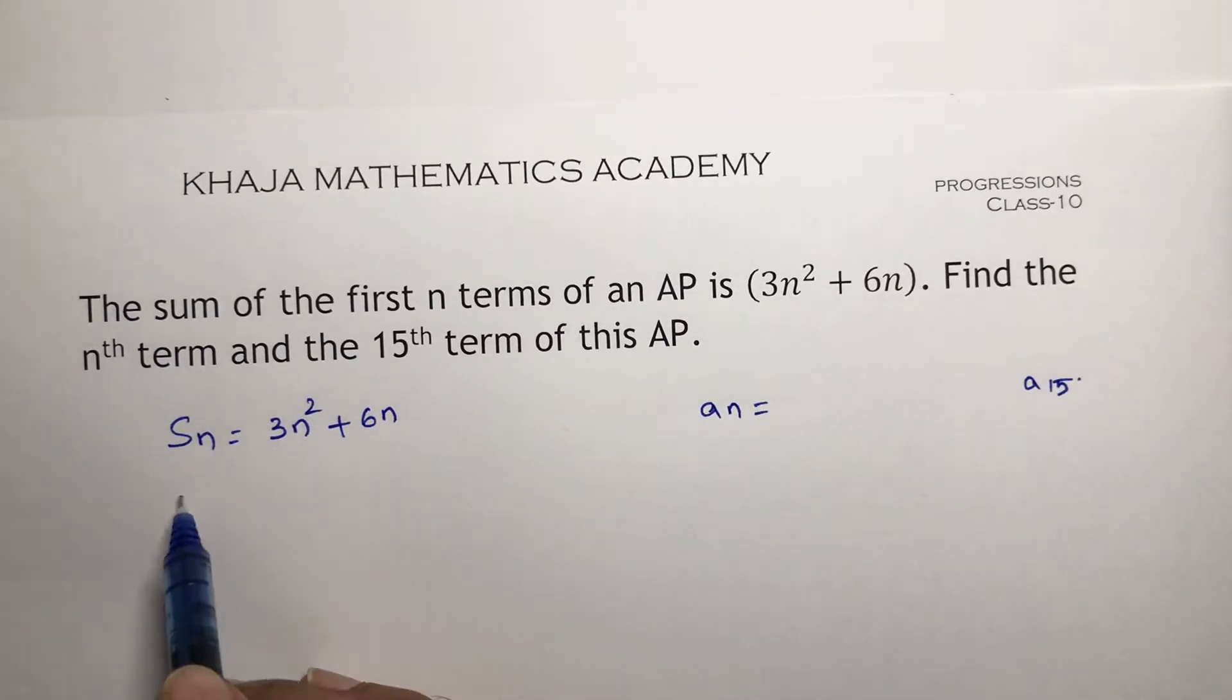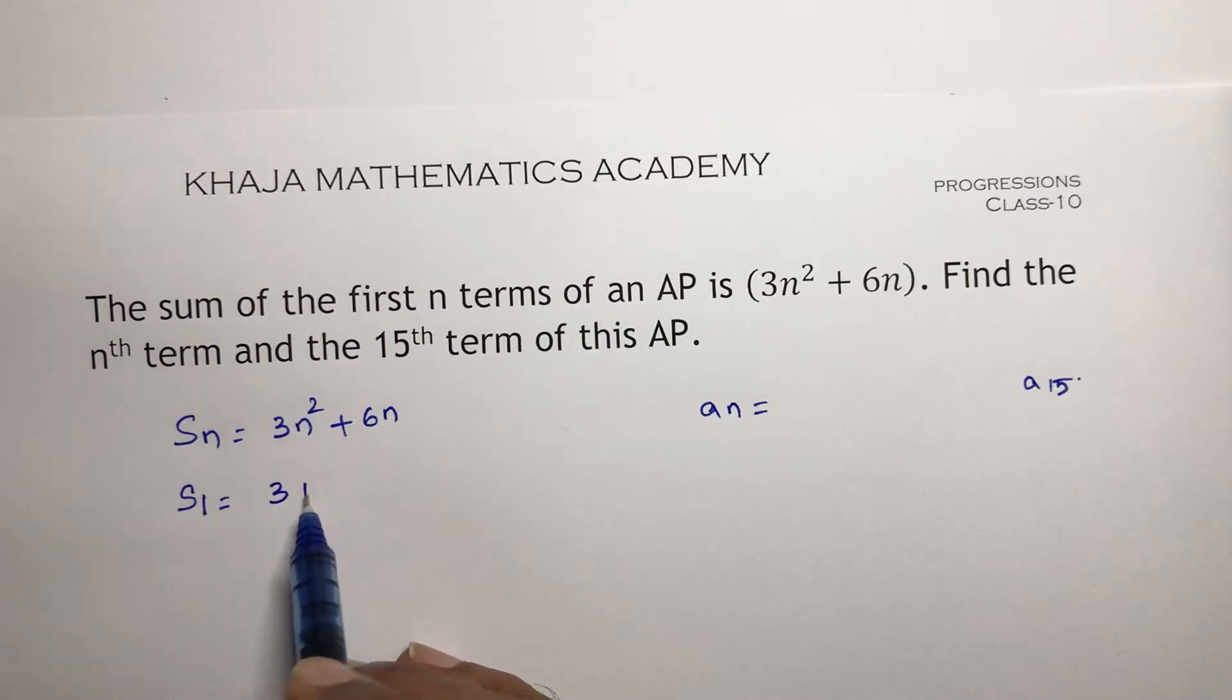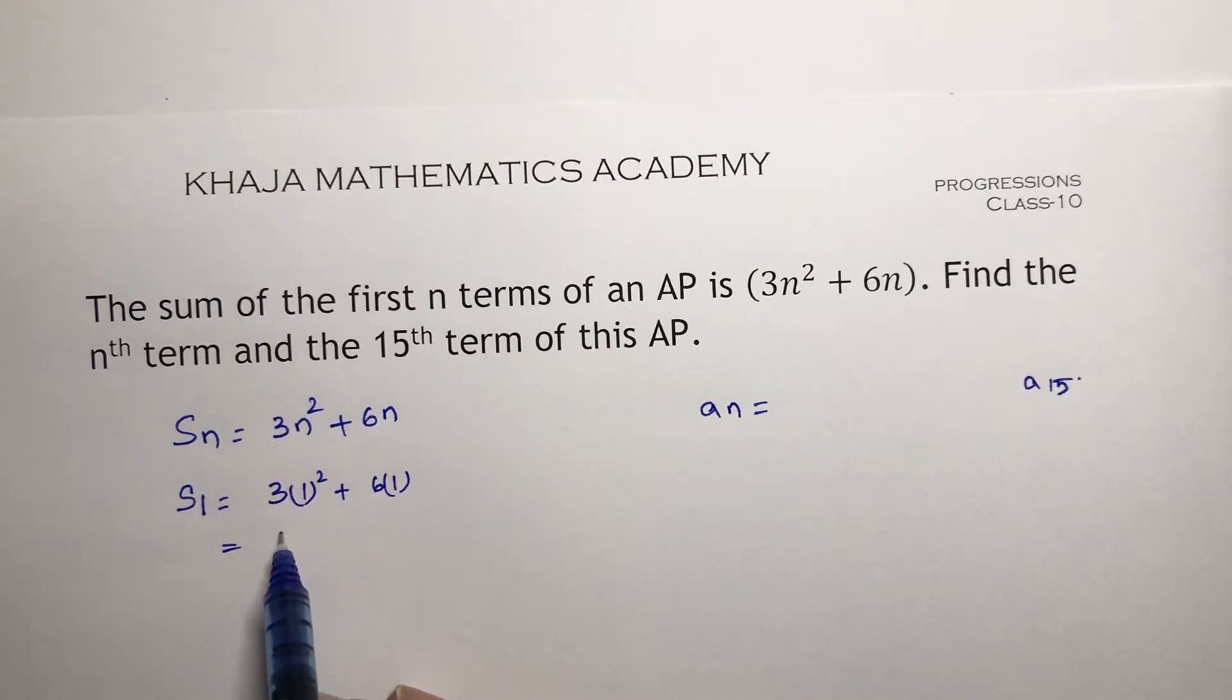So first calculate S_1. This is nothing but the sum of one term, which is just the first term. Directly you will get the first term. So here 3 plus 6 because 1² is 1. So 3 into 1 is 3, 6 into 1 is 6. So 3 plus 6 is 9. So S_1 is 9.